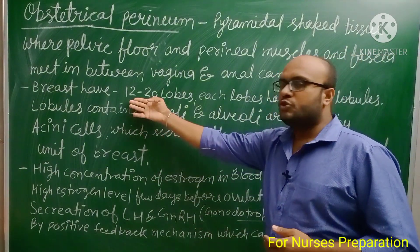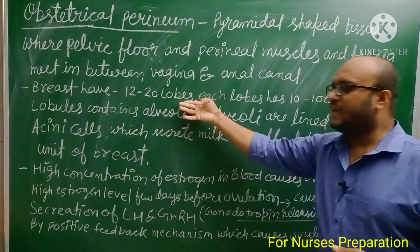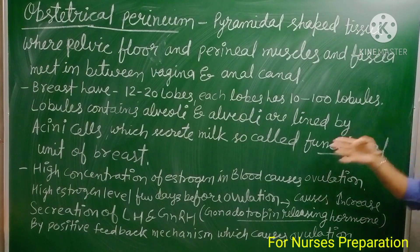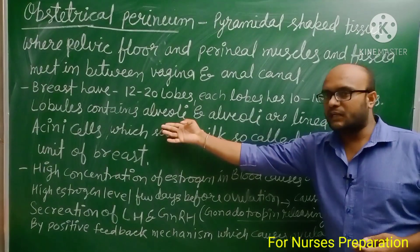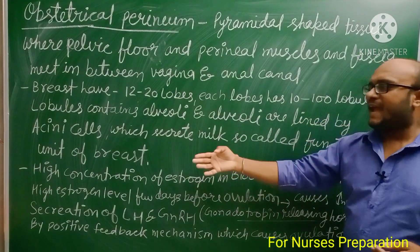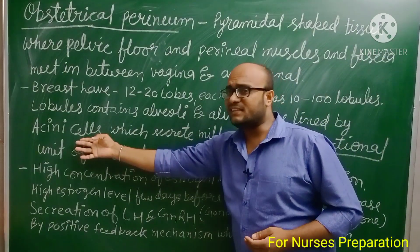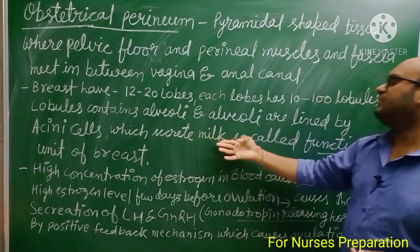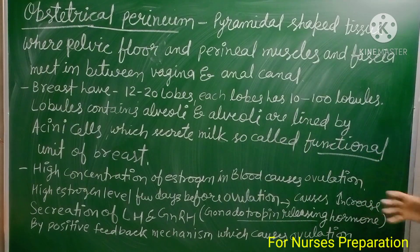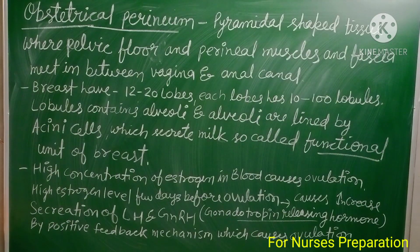Breasts have 12 to 20 lobes, and each lobe has 10 to 100 lobules. Lobules contain alveoli, and alveoli are lined by acini cells, which secrete milk. Therefore, acini cells are known as the functional unit of the breast.